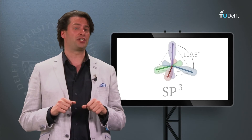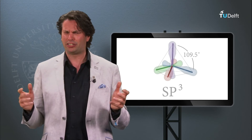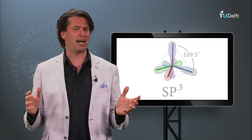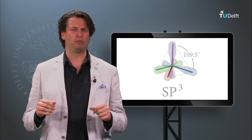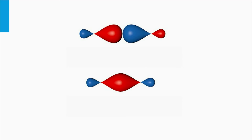Now we can roughly understand the coordination of the lattice of crystalline silicon, but still don't understand the origin of the band gap. For that, we have to look in more detail at how a bond is made between two atoms. Here you see two sp3 orbitals of two neighboring atoms which are at a far distance from each other. Both orbitals have one electron at a discrete energy level that resembles that of the sp3 hybrid. To establish a bond, the two atoms have to approach each other. The orbitals start to overlap and merge into one molecular orbital with its own shape.